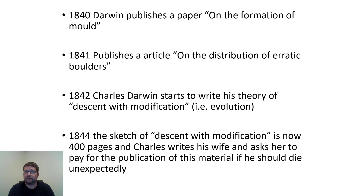Darwin argued that all species are connected and weren't individually created, and he questioned the age of the planet. Even without a good means to date it, he was fairly confident it was older than the four to six thousand years put forth in the 1800s. He also wrote a little about human evolution at the very end of the book, touching on our connection to the great apes. He knew all of this would make him an outcast in the eyes of the church, and his wife Emma was a devout Christian.